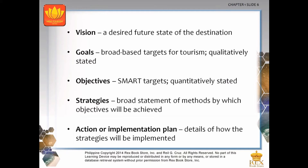Goals are broad-based targets for tourism which are qualitatively stated, while objectives are the SMART targets which are quantitatively stated. The difference is that objectives are more specific, measurable, attainable, realistic and time-bound. An example of a goal is to enhance national and regional economies, and to achieve this goal your objective is to gain foreign currency by marketing tourism to key foreign markets.